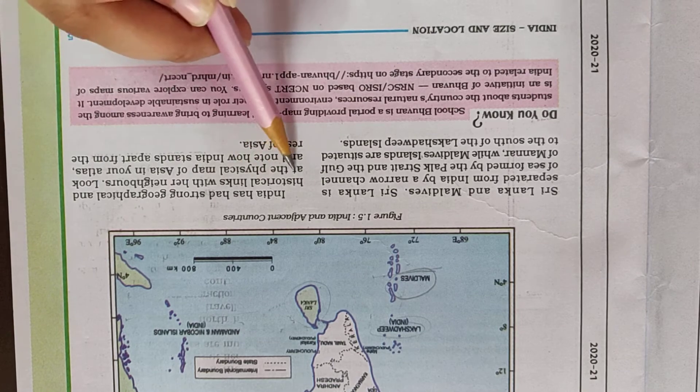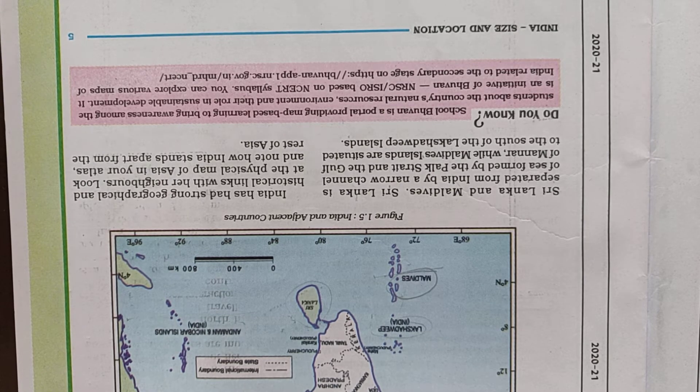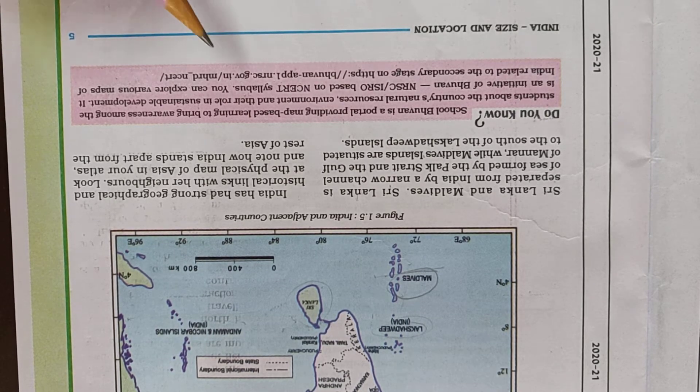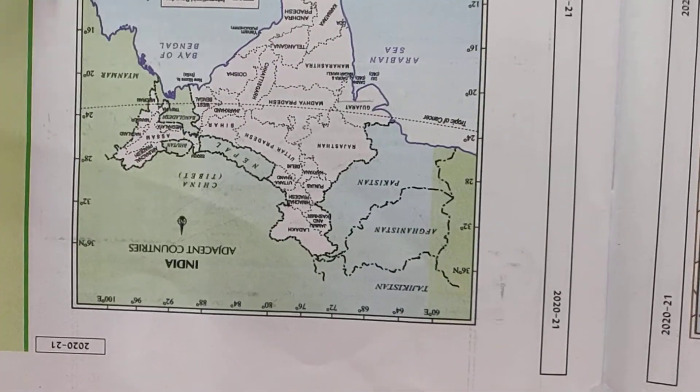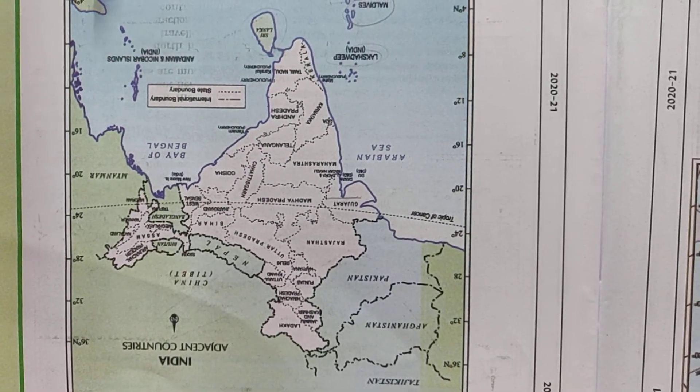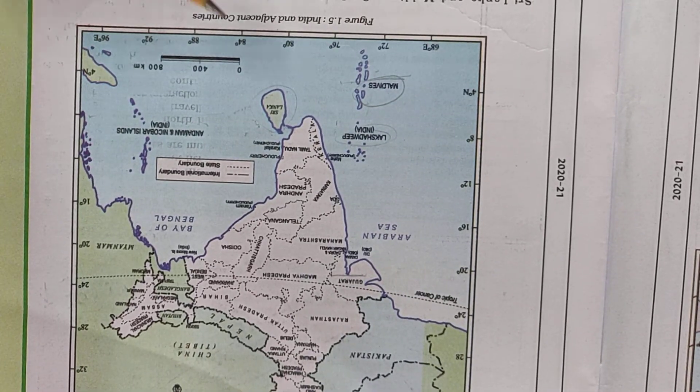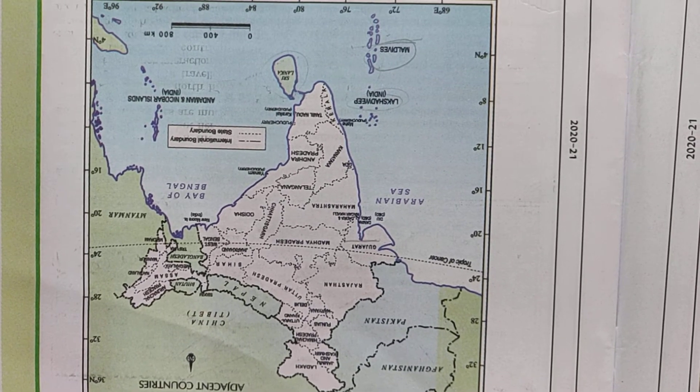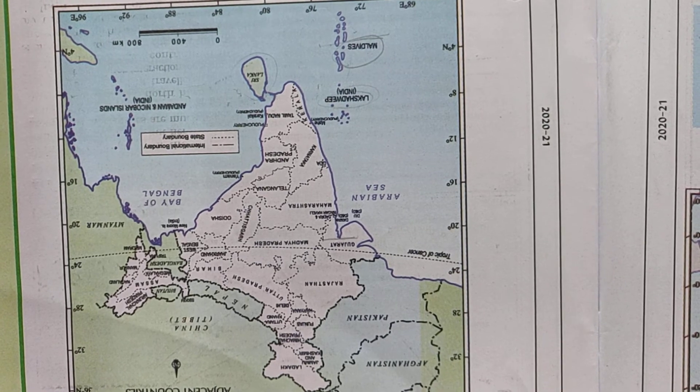India has had strong geographical and historical links with her neighbors. Our India shares geographical boundaries with many neighboring countries — Pakistan and Afghanistan to the southwest, Nepal and Bhutan to the north, and Myanmar and Bangladesh to the east. These are all neighboring countries because India shares boundaries with them. If you look at the physical map of India in your atlas, you can see how India stands apart from the rest of Asia and how it shares boundaries with its neighbors.